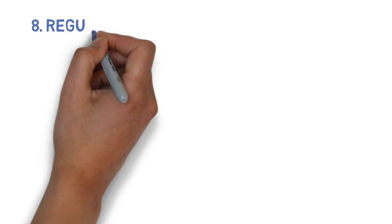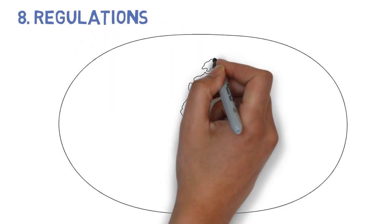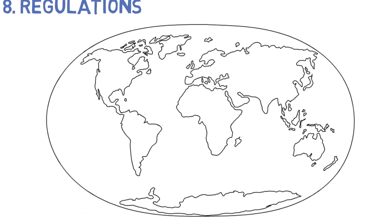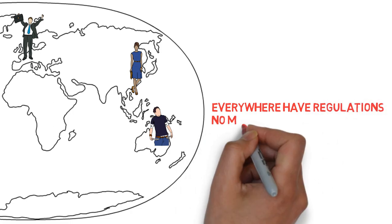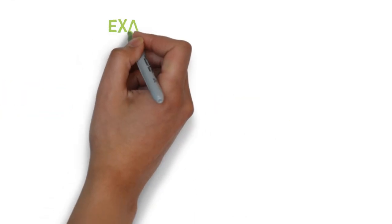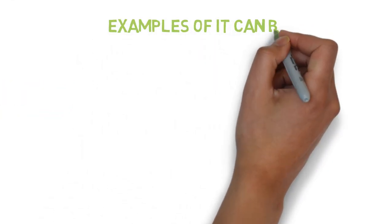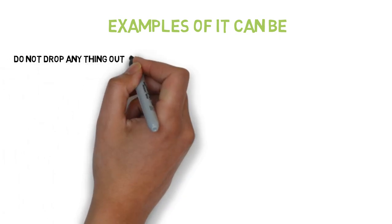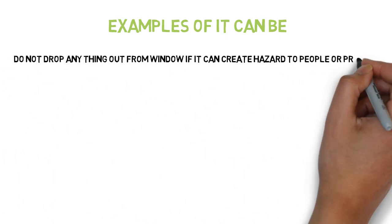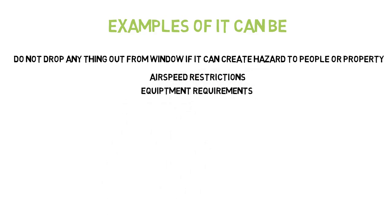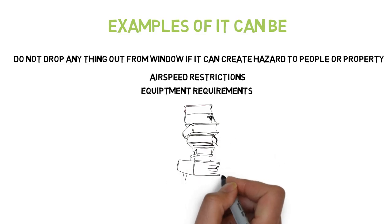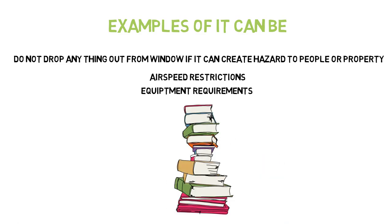The last one, number eight, is regulation. Depending on where you are in the world, every country has different regulations. But anyway, everywhere there's regulation no matter where you are. One example can be: do not drop anything out of the window if it can create any hazard to people or property on the ground. That's one of the regulations in the US. And airspeed restrictions, equipment requirements to fly—there's so much more. Good luck on your study.